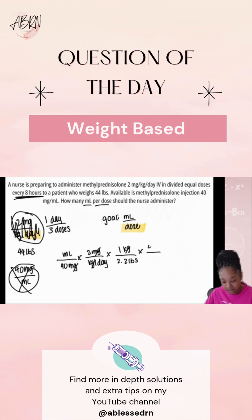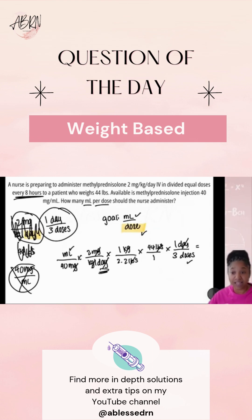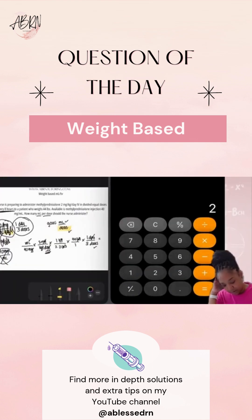44 pounds is now on the top, and you see that cancels out as well. My last puzzle piece is getting rid of the day, so I can have dose at the bottom. This is the only one left: one day is equal to three doses. You see what's on the bottom cancels out what's on the top, and what do I have? Milliliter — done. Dose — done. Puzzle complete.